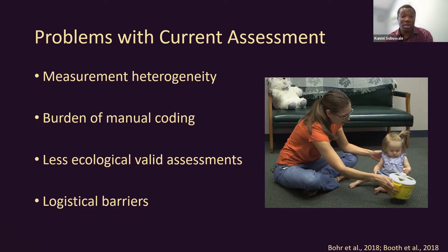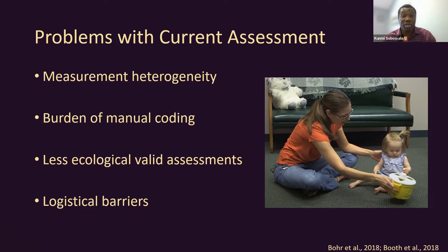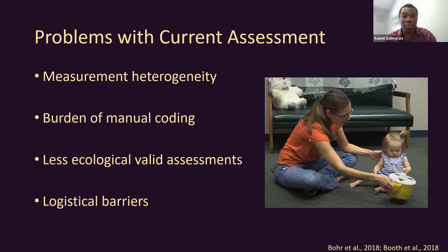There are logistical barriers: difficulty getting to the lab, going to the home, setting up equipment, all compounded by COVID. Because of these challenges, it can lead to small and less diverse samples. There are advantages of coming to a lab and having a structured experiment, but it may not capture aspects of naturalistic interaction. What we need are new tools to both help us capture this interaction and process the information in a way that wouldn't be so burdensome. Once we capture this interaction, we can use theory or data-driven processes like machine learning to test hypotheses on how this interaction affects child outcomes.